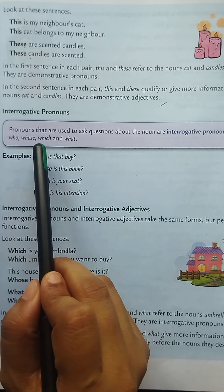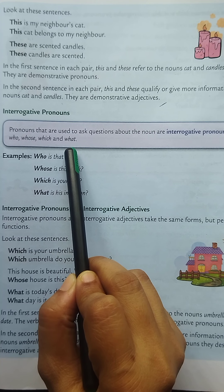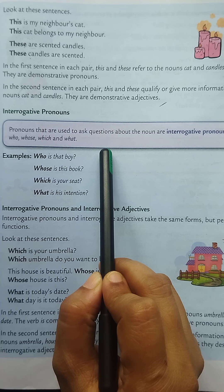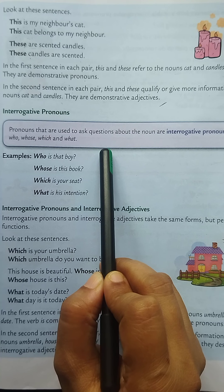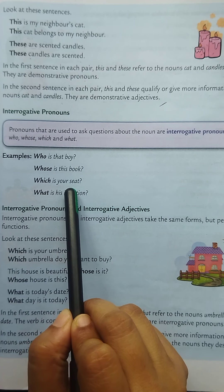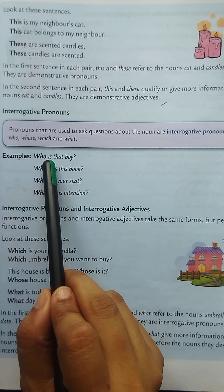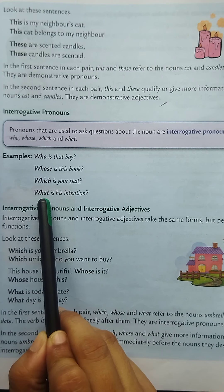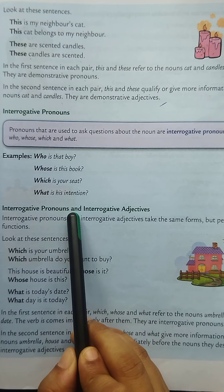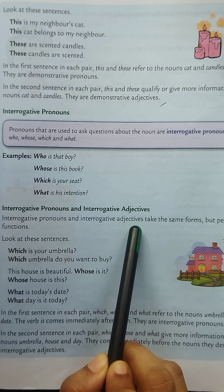Now, what are called interrogative pronouns? Pronouns that are used to ask questions about the noun are interrogative pronouns. They are who, whose, which, and what. Examples: Who is that boy? Whose is this book? Which is your seat? What is his intention? Here, who, whose, which, and what are called interrogative pronouns.